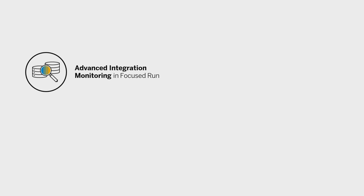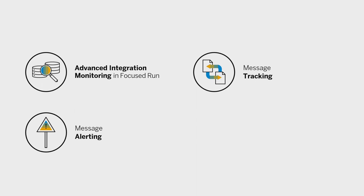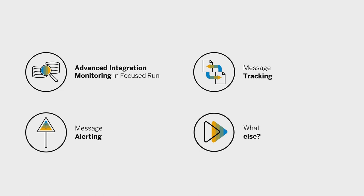You will learn how you can monitor and analyze all process orchestration messages across technical systems, or only the messages for specific scenarios; how the message tracking feature enables you to keep tabs on specific messages; and how message alerting can inform you proactively of issues for a quick resolution. Finally, we will show you which other on-premise categories and cloud services you can manage.